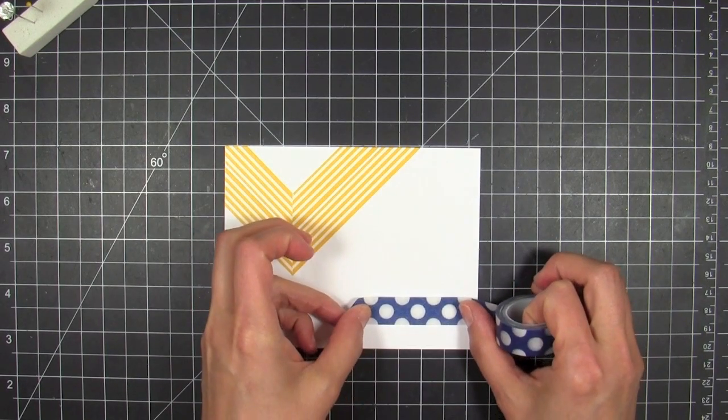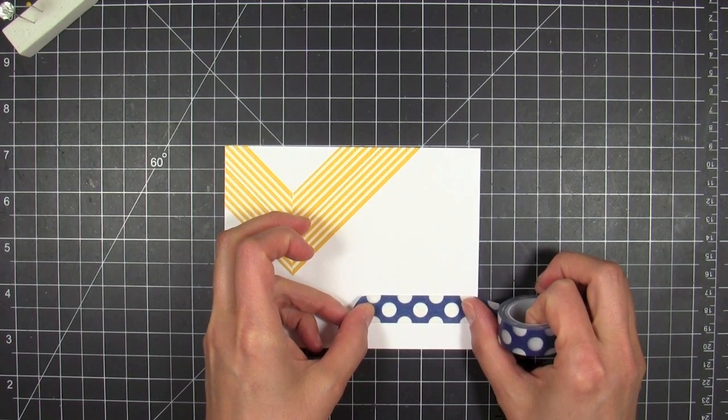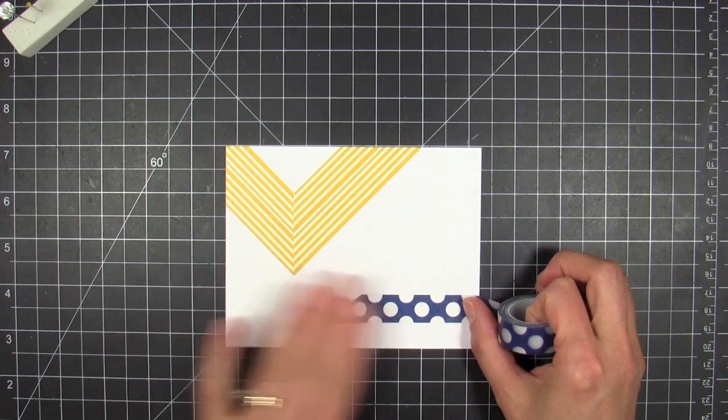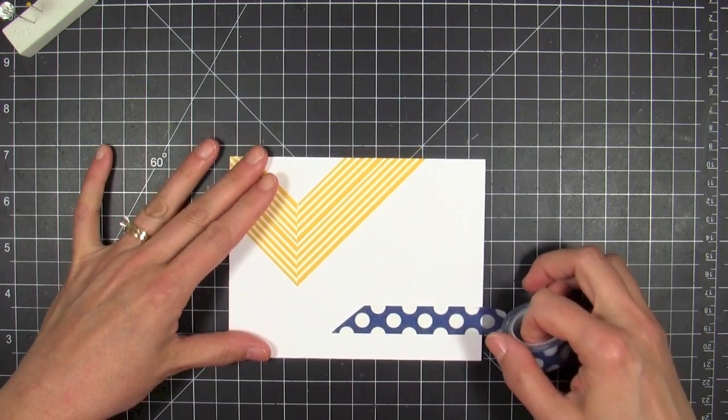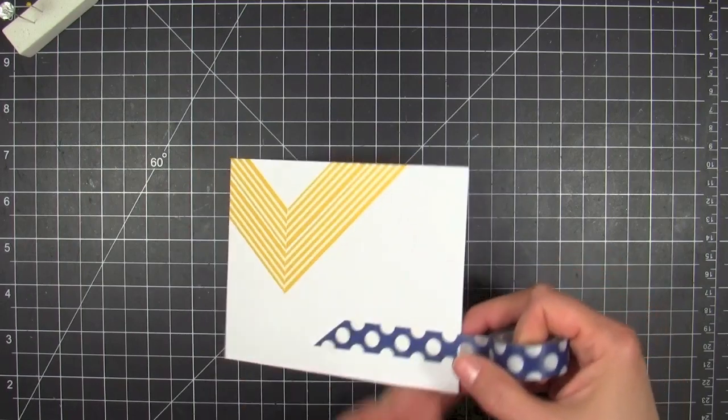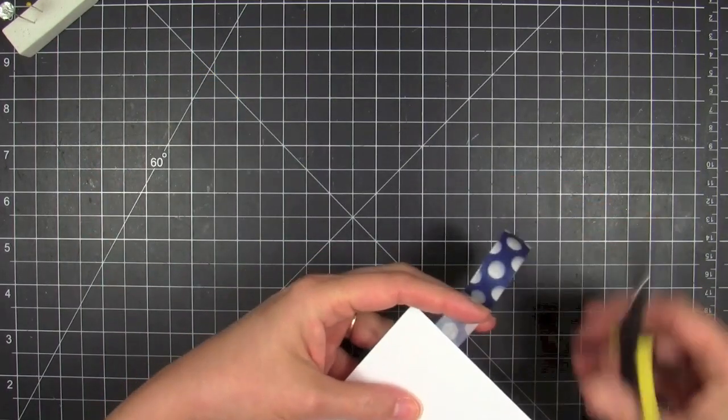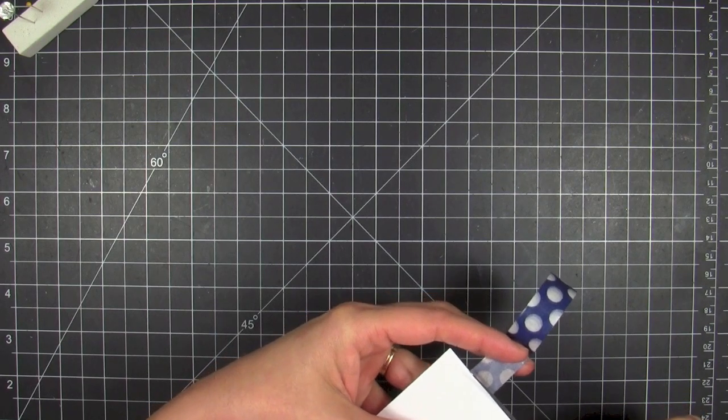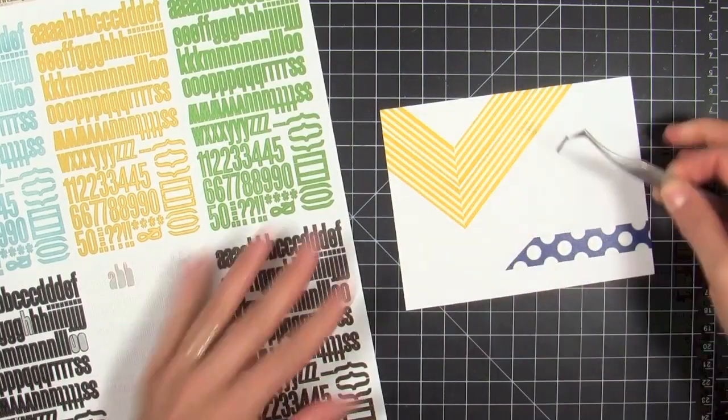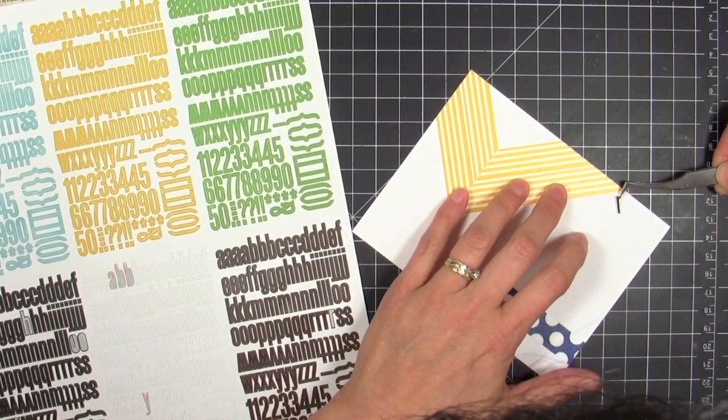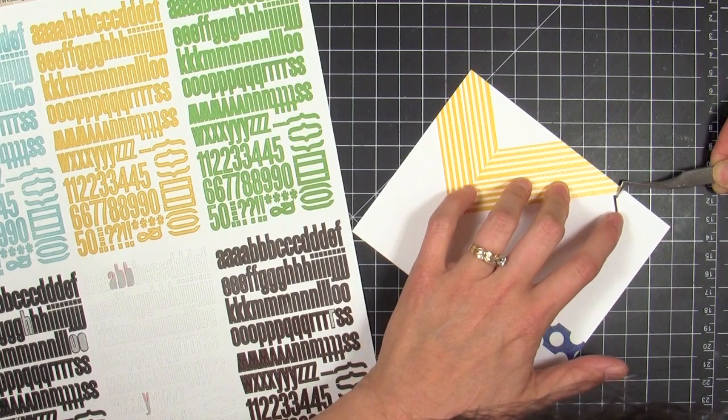Then I'm going to take some more of this My Mind's Eye washi tape. I had to use these blue and white polka dots—they're just too fun. I just took a strip I'd already cut on the diagonal and just left it as it was, and went ahead and ran a horizontal strip of it there just to serve as an accent, a visual accent down there on that side of the card.